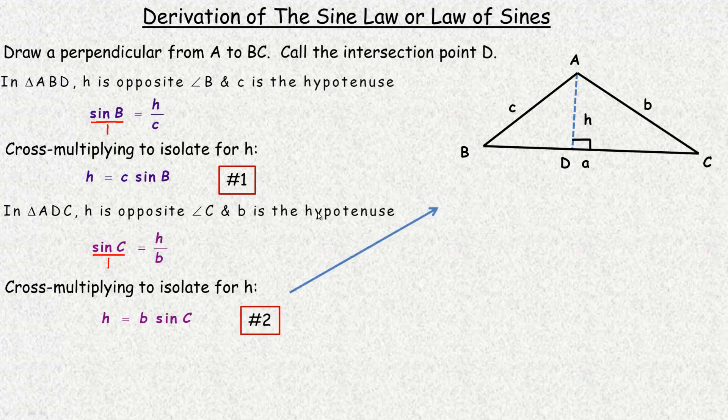Now, we're going to equate numbers 1 and 2. What I mean by that is that here we have H equals c sine B, and here we have the same H equals b sine C. So this and this must be equal, because they're both equal to H. That's what I mean by equating numbers 1 and 2. These expressions are both equal to H, so they must be equal.